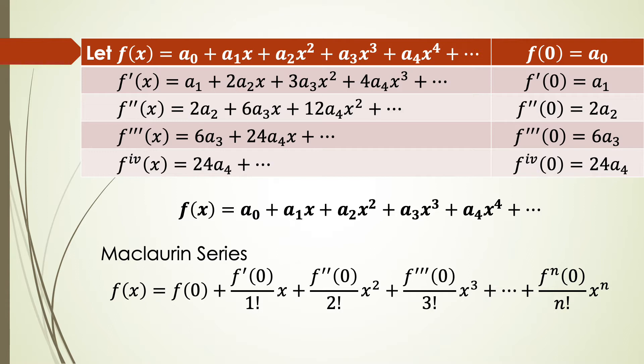We have a polynomial function f. We call the coefficients a0, a1, a2, and so on. When x equal to 0, we have f equal to a0.